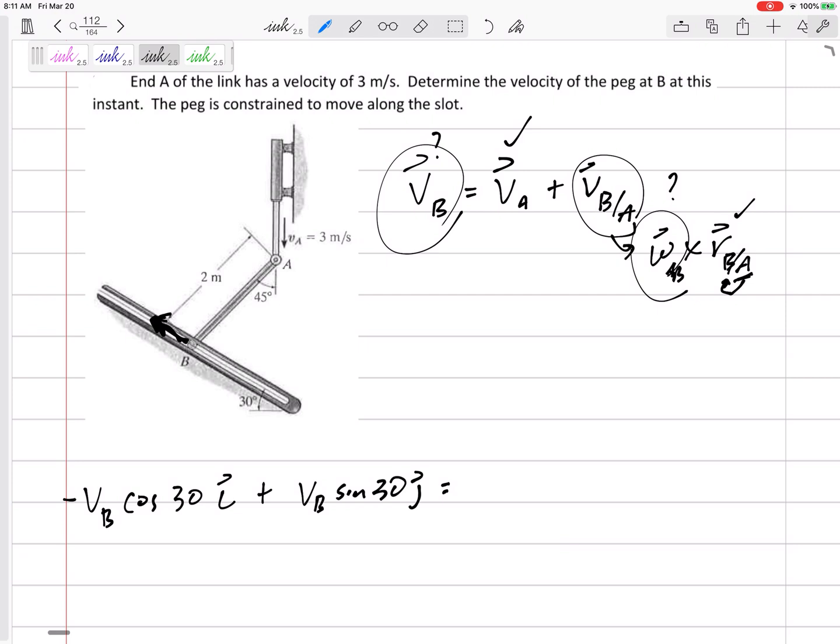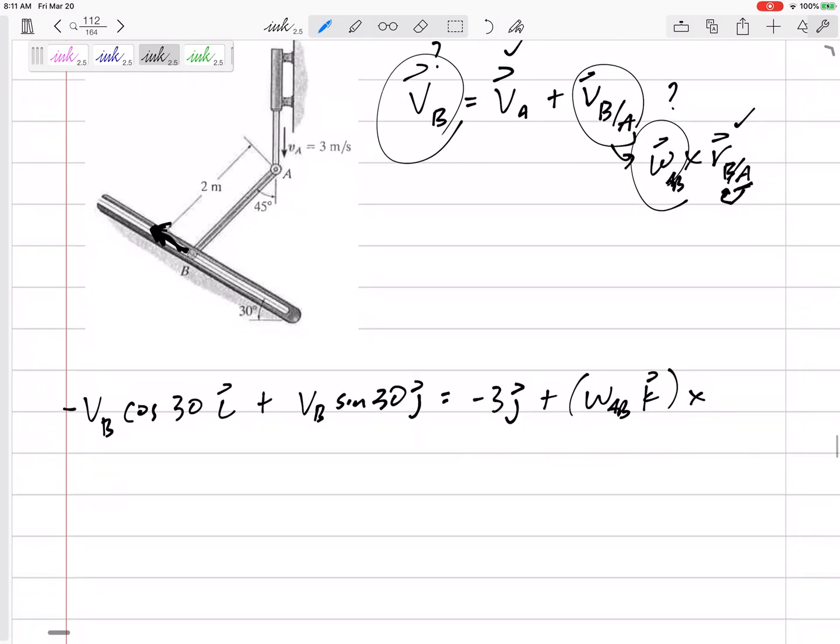The A is just negative three in the j. Omega of the bar I don't know, but I know it's in the k direction because this is a 2D problem. All my angular information is clockwise or counterclockwise in the k direction. So cross this with an r that's going from A to B. That would be to the left, 2 sine 45 in the i, and down, 2 cosine 45 in the j.